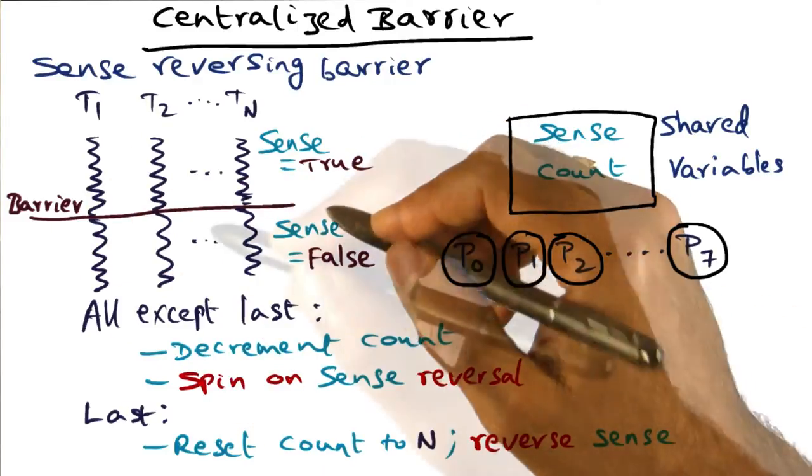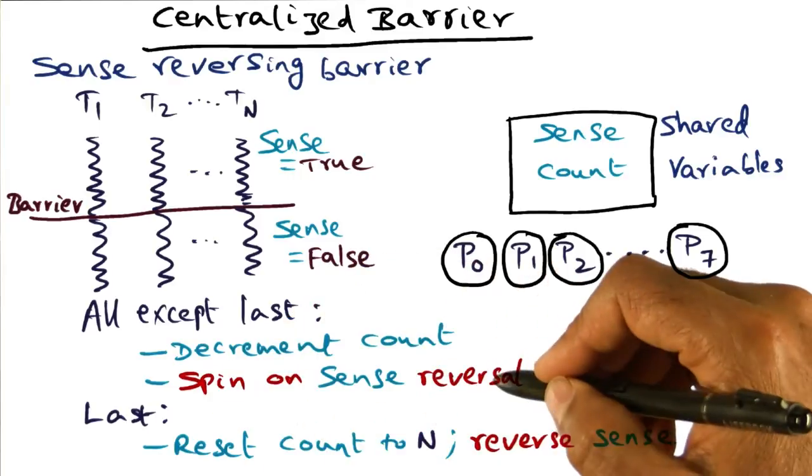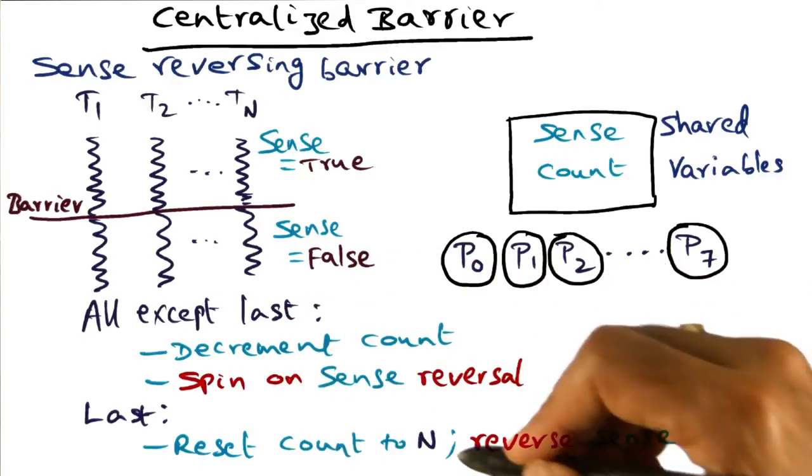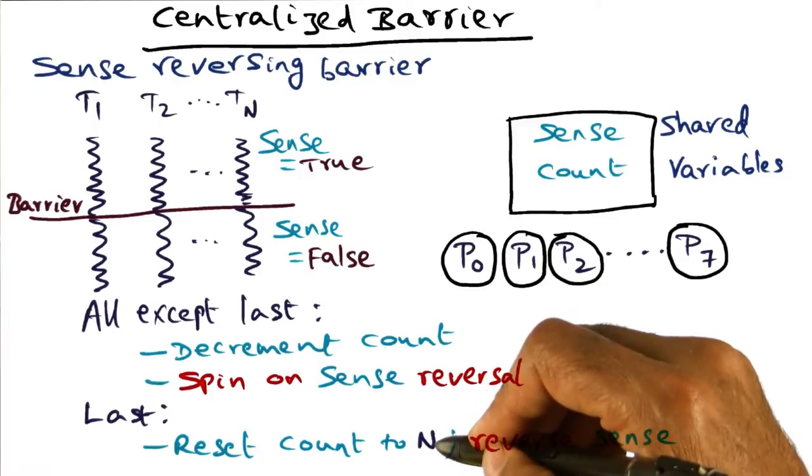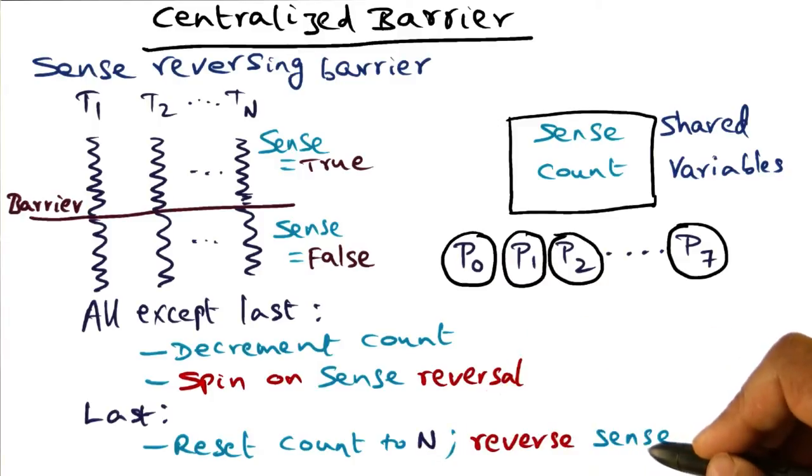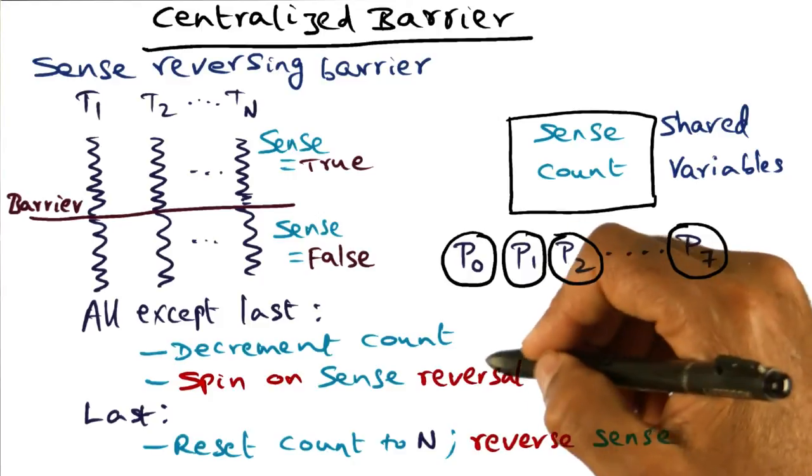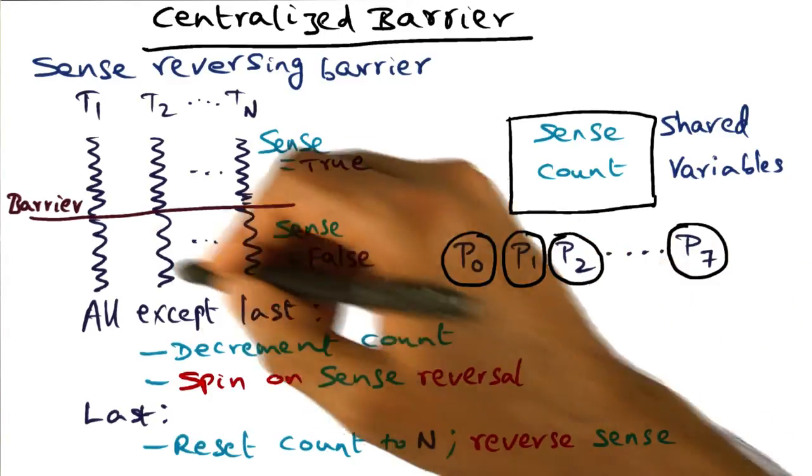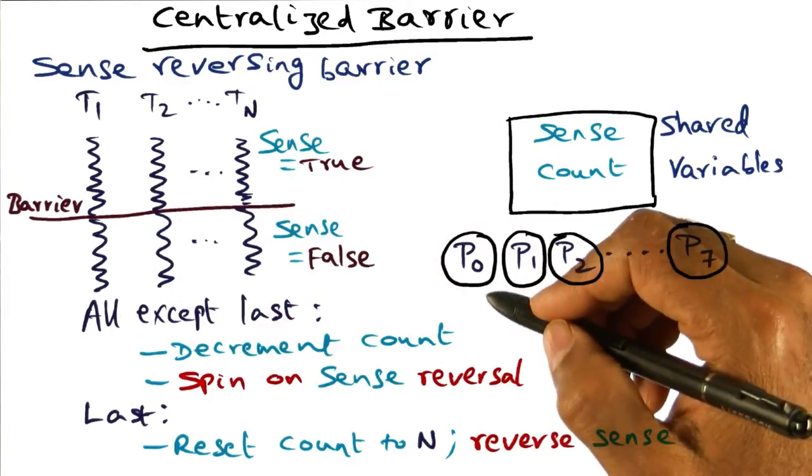What we're doing is, we decrement the count and spin on sense reversal. Last guy decrements the count, when count goes to zero, resets it to n, and then reverses the sense. And that is the signal for all the waiting processes to say, well, we can now go on to the next phase of the computation.